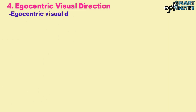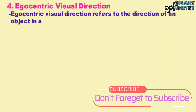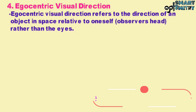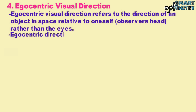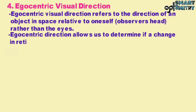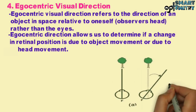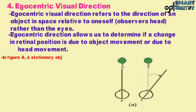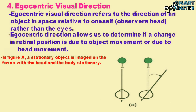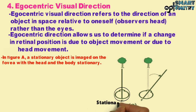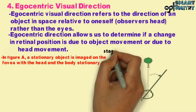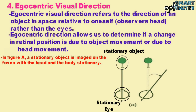Fourth, Egocentric Visual Direction refers to the direction of an object in space relative to oneself — that is, relative to the observer's head rather than the eyes. Egocentric direction allows us to determine if a change in the retinal position is due to object movement or due to head movement. In figure A, a stationary object is imaged on the fovea with the head and body stationary, and the image of the stationary object is focused on the retina.